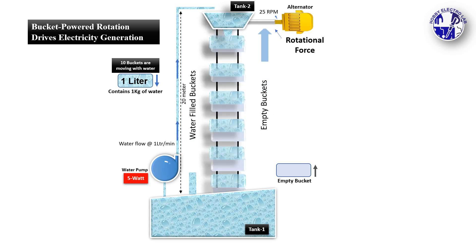The rotation is transmitted to a 100-watt alternator, converting the mechanical energy into electrical energy. Once a bucket reaches the bottom, it empties its water back into Tank 1 and is pulled back up to repeat the cycle.